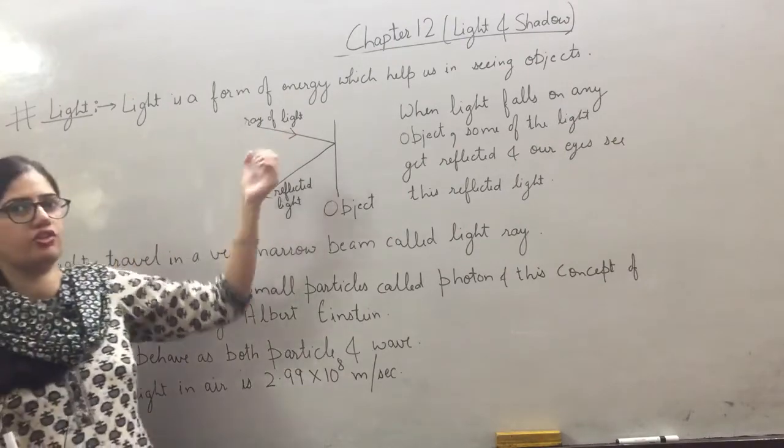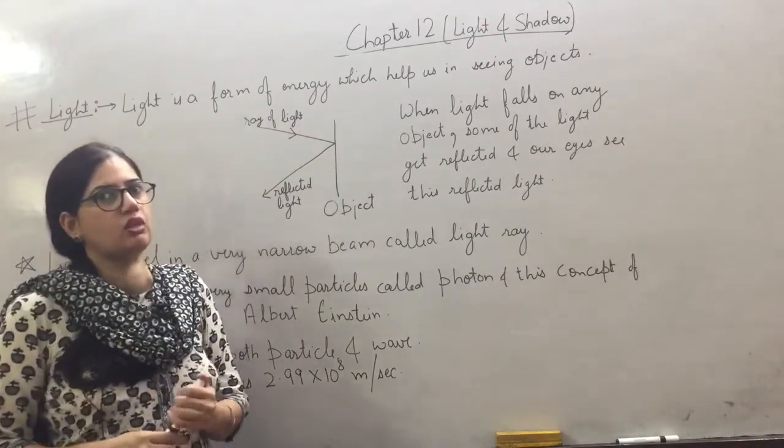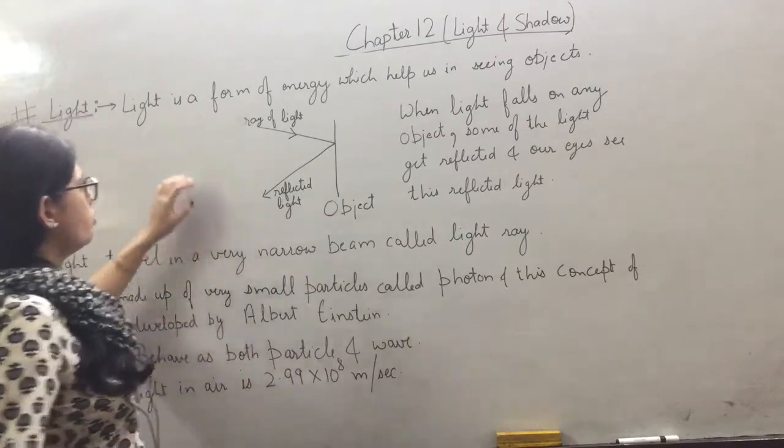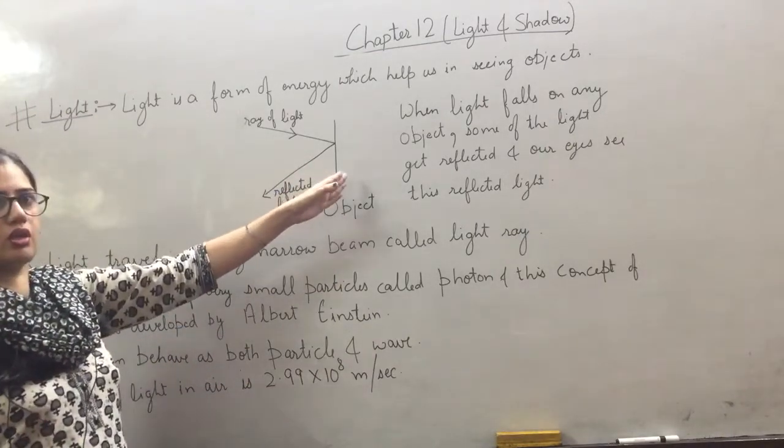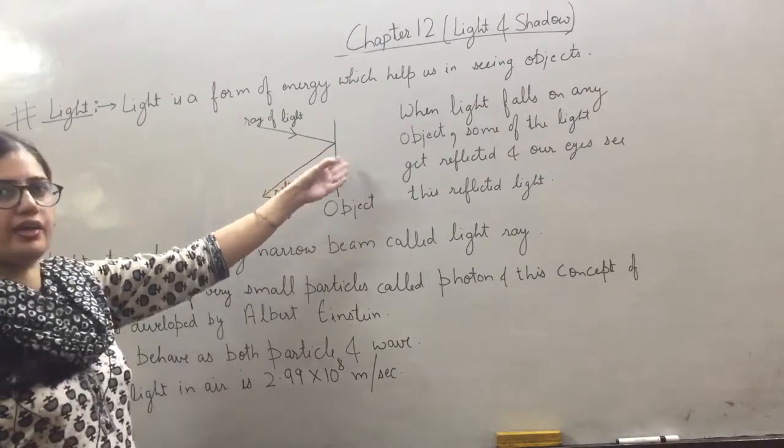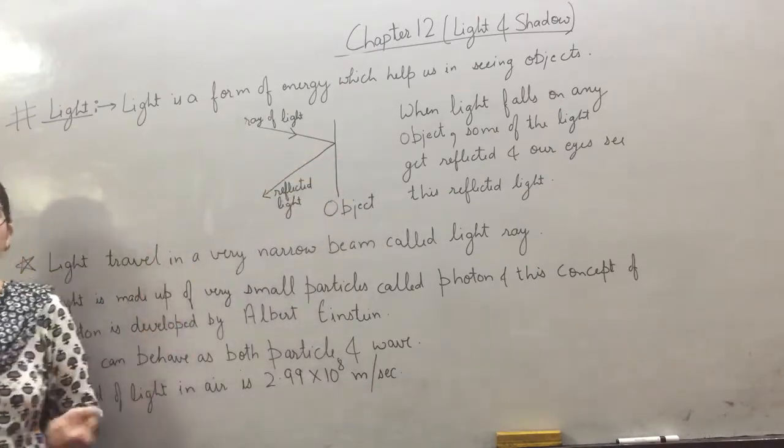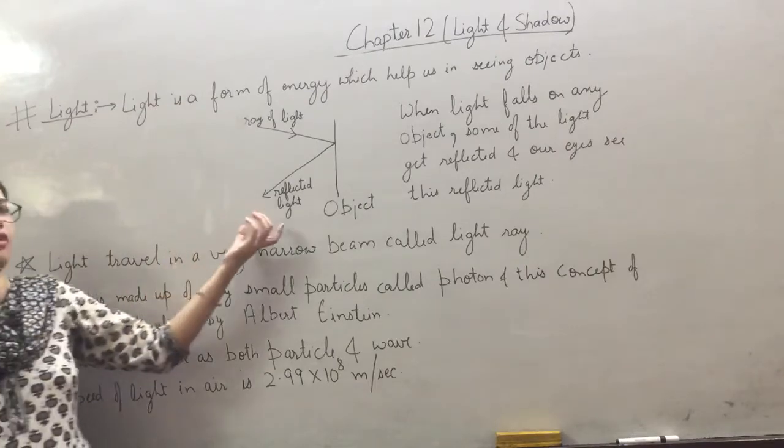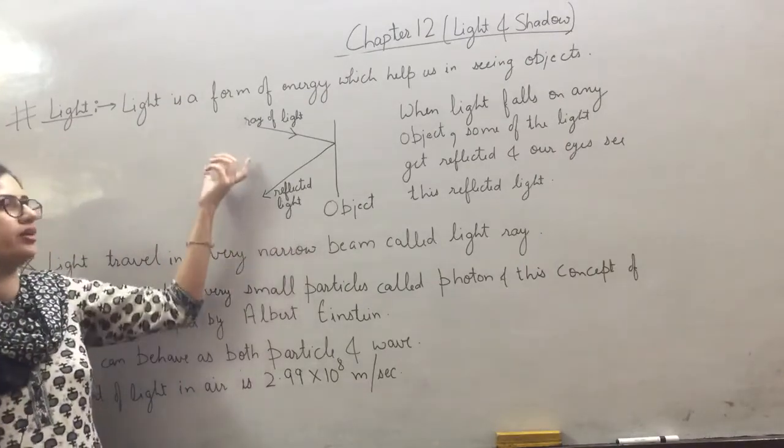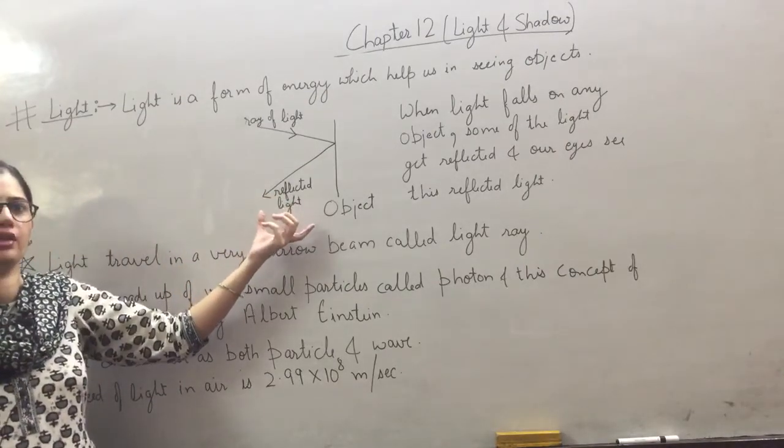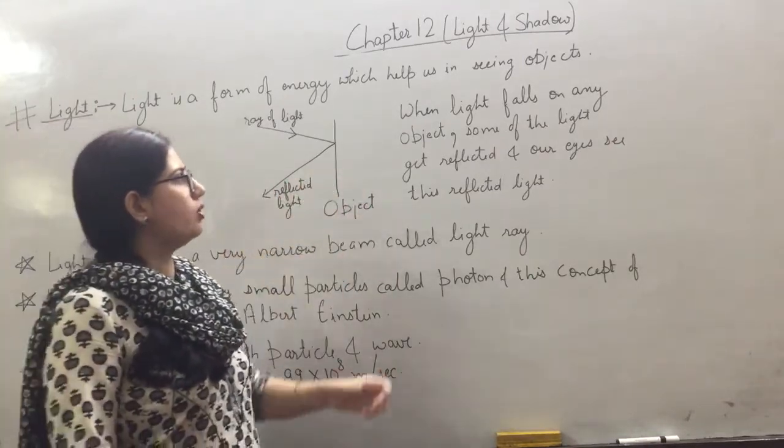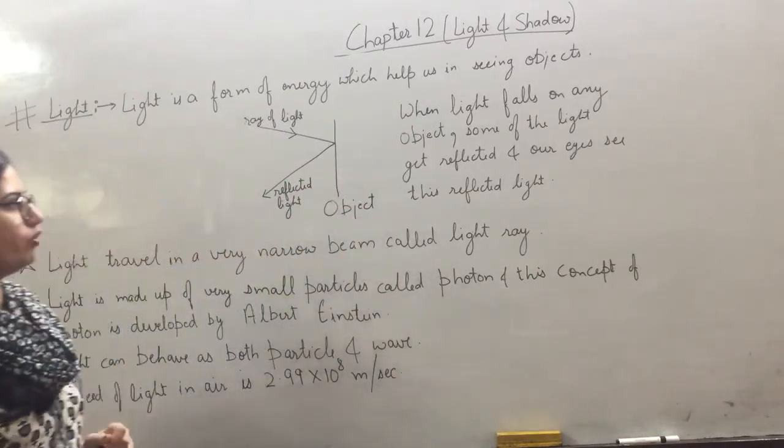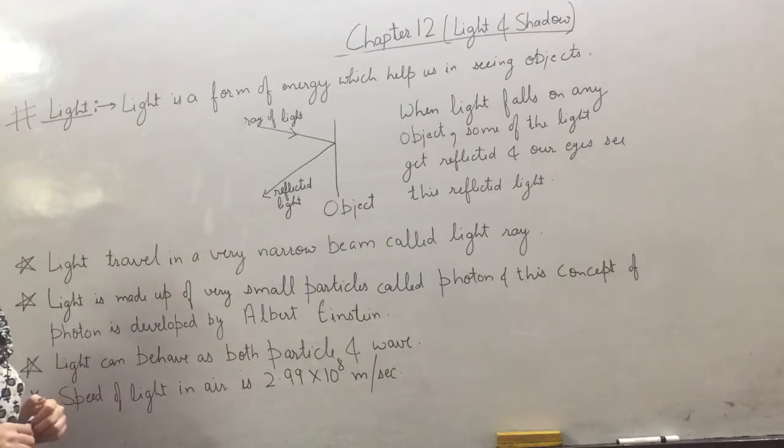Light is a form of energy which helps us see. When light falls on any object, some of the light gets reflected. On direct light, we can see reflected light. So when light falls on any object, some of the light gets reflected and our eyes see this reflected light.